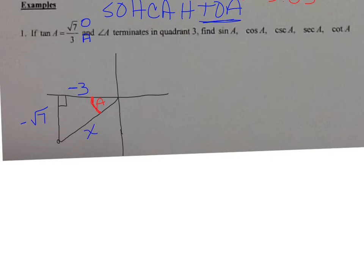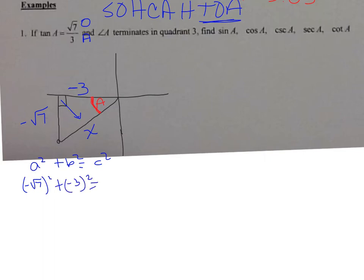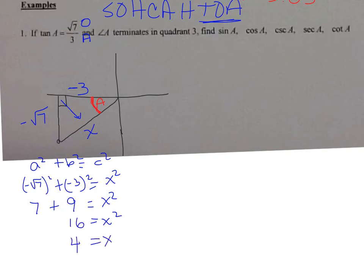Now find the remaining side — the hypotenuse — using the Pythagorean Theorem. A squared plus b squared equals c squared. So negative square root of 7 squared plus negative 3 squared equals x squared. Negative square root of 7 squared is 7, plus negative 3 squared is 9, equals x squared. So x squared equals 16. Take the square root of both sides — x equals 4. Since we're talking about the hypotenuse, the hypotenuse will always be positive, so this side is 4.